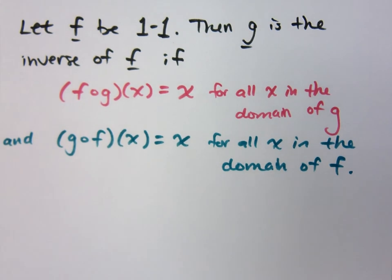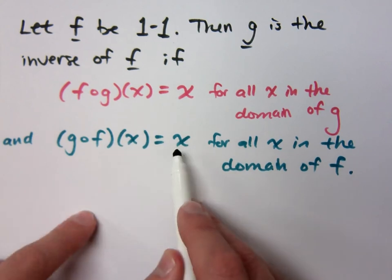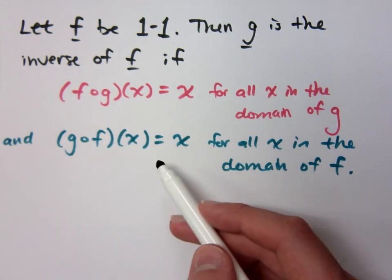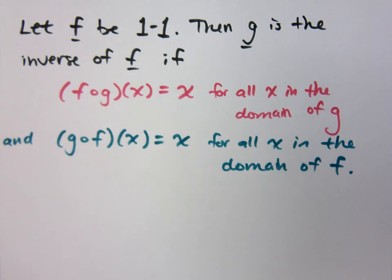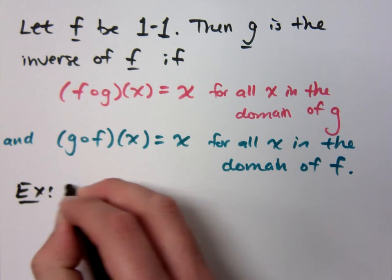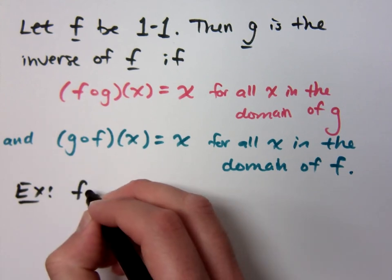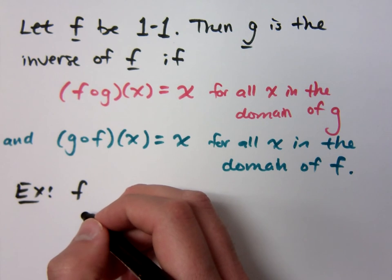So what this is saying is that if you're going to be inverse functions, if you stuff one inside of the other function, you'll always get x. If you stuff it the other way, you still always get x. Confused? If I give you that situation where you're saying f is one-to-one and g is inverse of f.